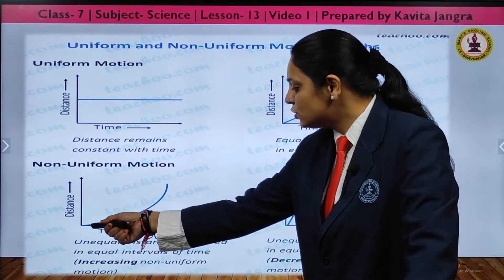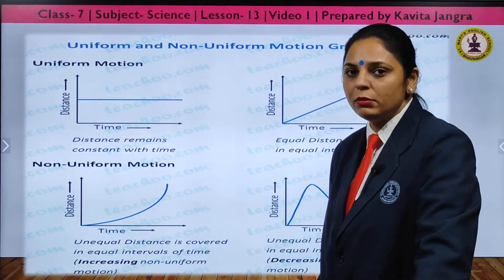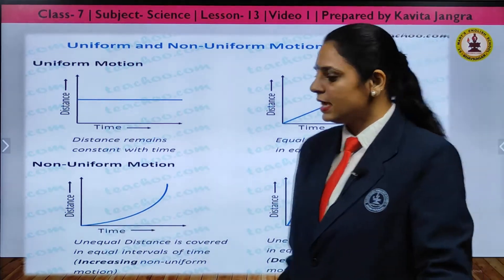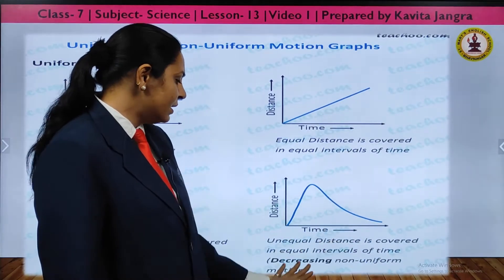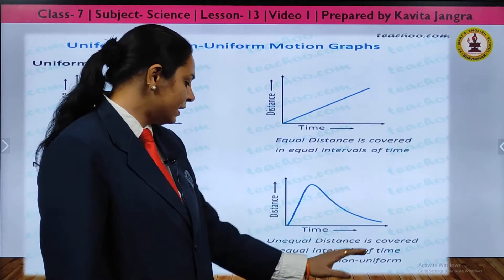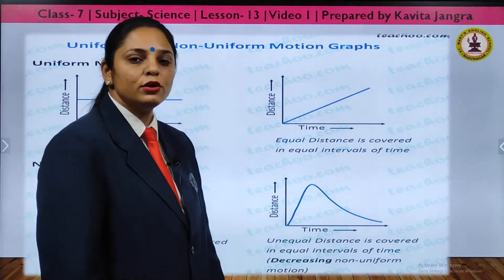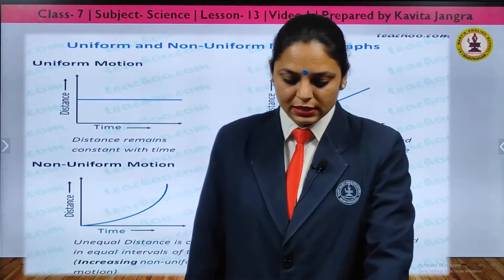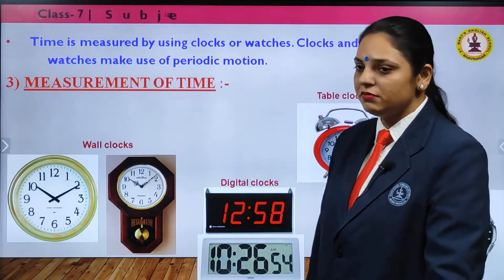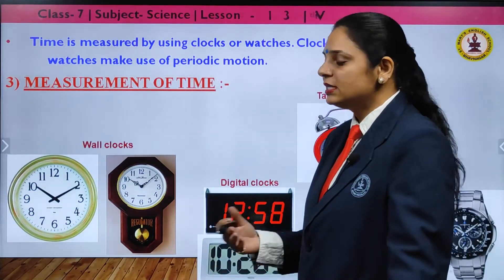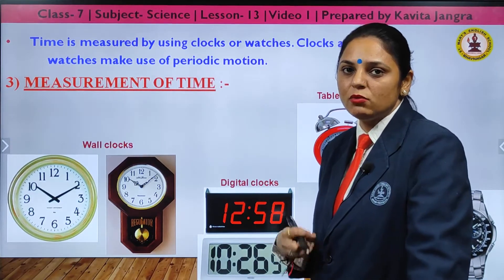In a curve that slowly increases, there is an increase in non-uniform motion. On the other side, a curve that decreases shows unequal distance covered in equal intervals of time — a decrease in non-uniform speed. These DT graphs depend on whether the distance covered in equal intervals of time is equal or not.